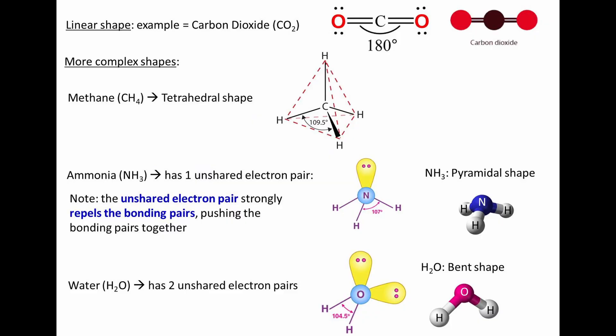Carbon dioxide has a linear shape, but there are more complex shapes as well, like methane, which has a tetrahedral shape. In methane, the angle between the CH bonds is 109.5 degrees.